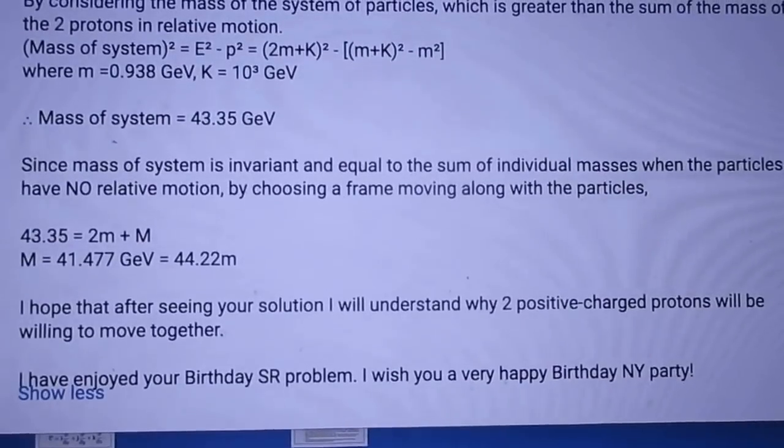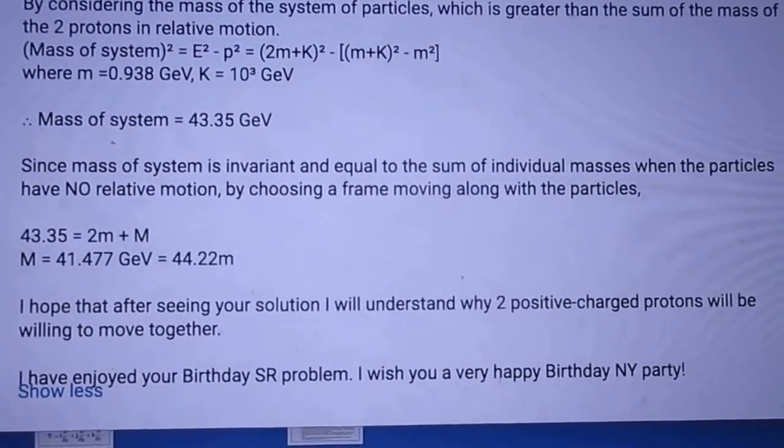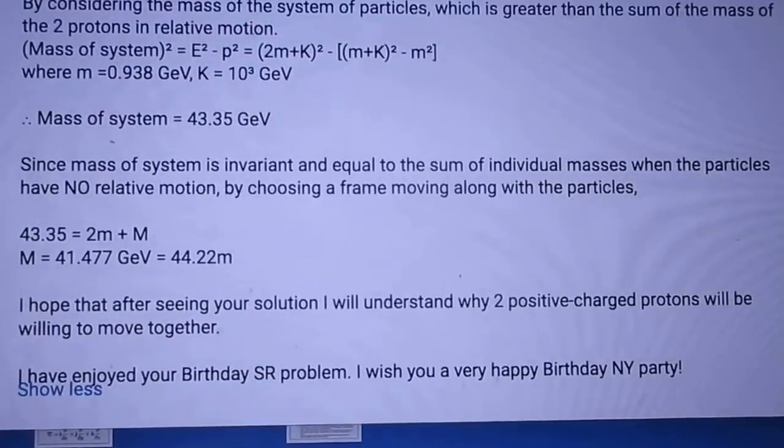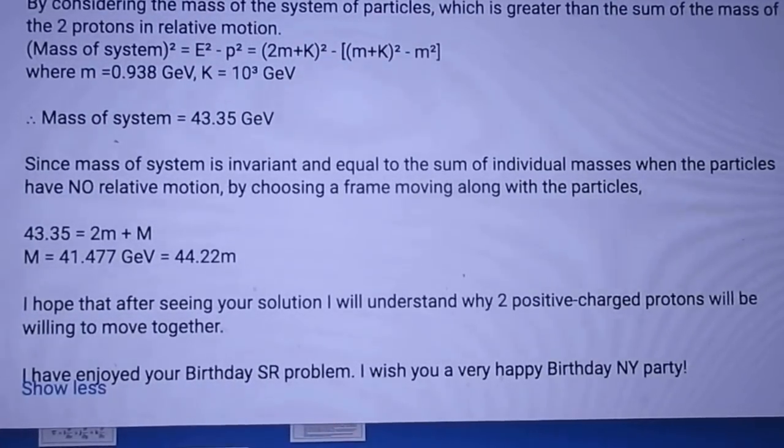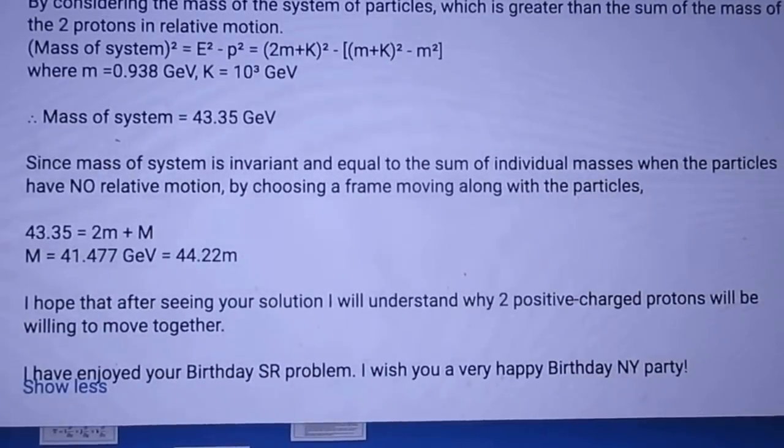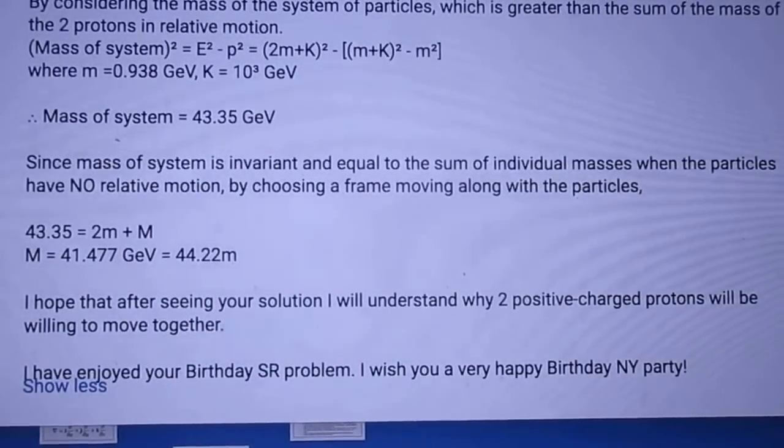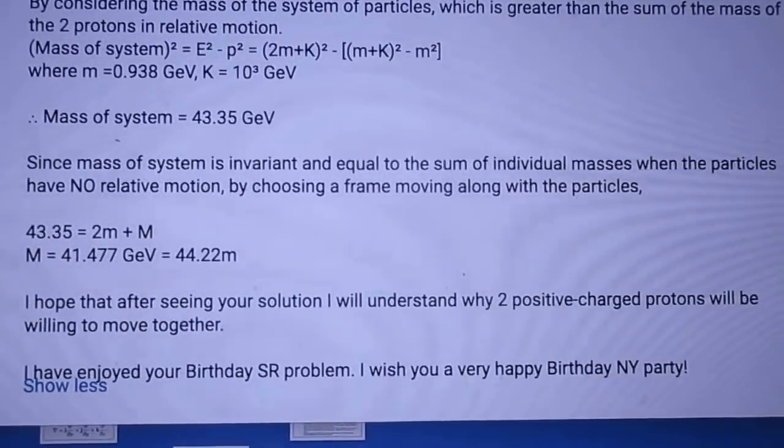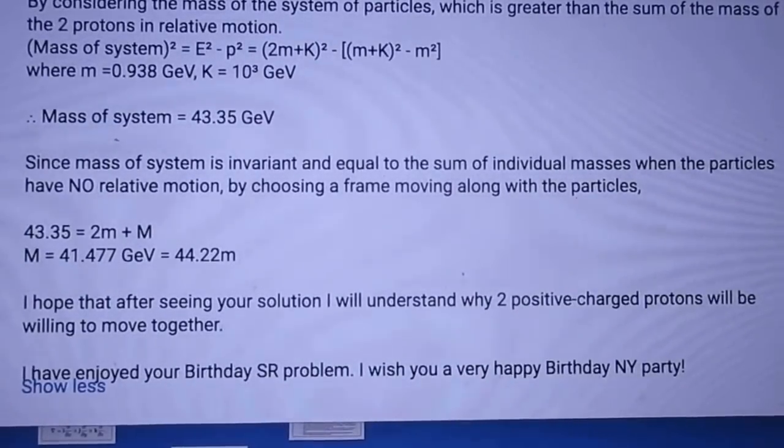And if you deduct the 2 now which is what Hanger did then you get 44.22. Alfred stays all the way with GeV's and then he finally converts to the masses.